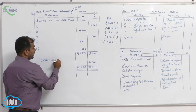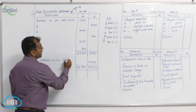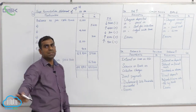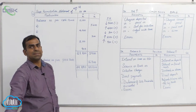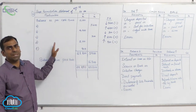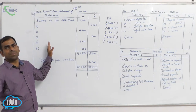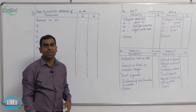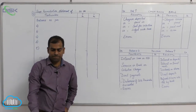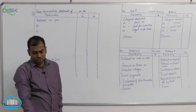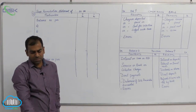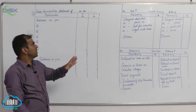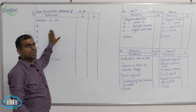We write it as 'Balance as per Passbook', since we are finding out the passbook balance. This is how we have completed the fourth problem. Now we will see the fifth problem. Ready's cashbook shows a favorable balance of 25,500, so the first sentence tells you that you are given the cashbook balance.